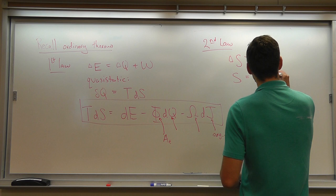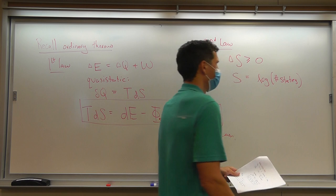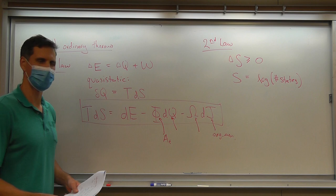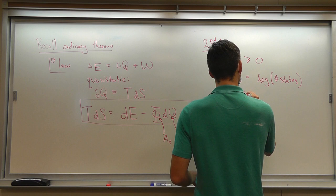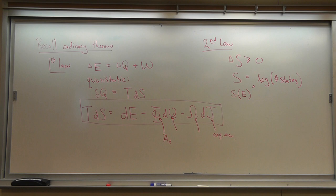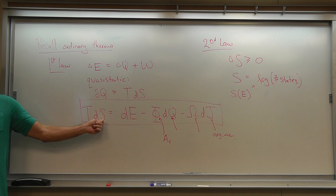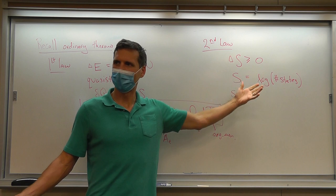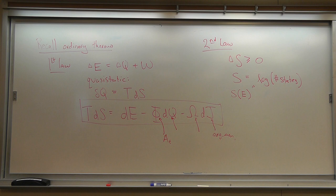But of course, we know that in statistical mechanics it has a microscopic interpretation as the log of the number of states accessible in the system. More carefully: S at energy E is the log of the number of states of energy E. We have to be careful because in ordinary thermodynamics we're usually thinking of S in the canonical ensemble. This is S in the microcanonical ensemble, but they agree in the thermodynamic limit, so these are the same S.